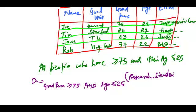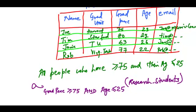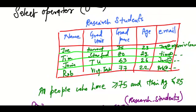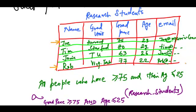So when I do this I will get a relation which has all the people who have graduation percentage greater than 75 and age less than 25. Let's see what these values are. I will have Joe. His percentage is 75 and his age is 23. And I would have Rob. His percentage is 77 and his age is 22 which is less than 25.